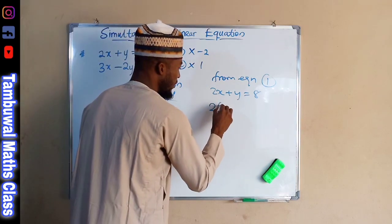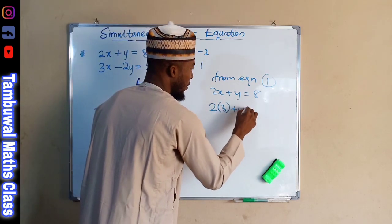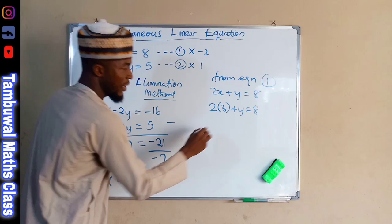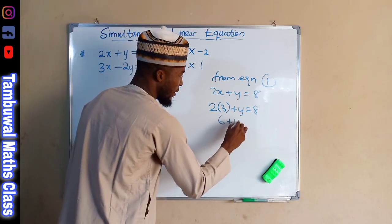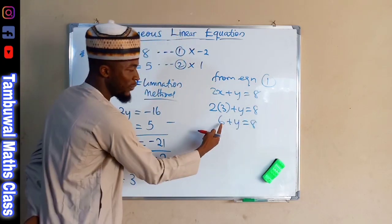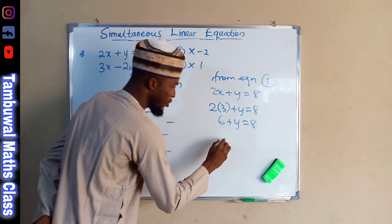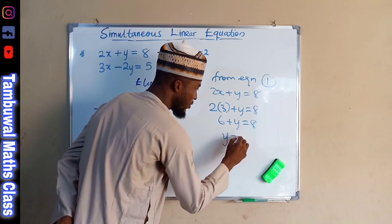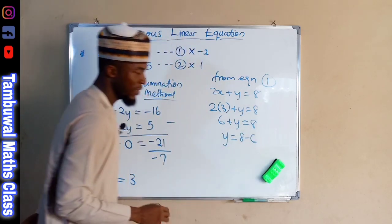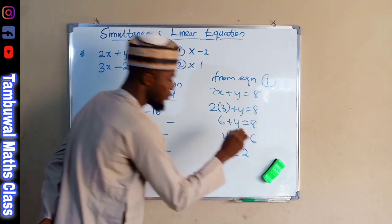So, we say 2 times 3 plus Y is equal to 8. And this is 6 plus Y equals 8. If you take this to the right-hand side, it becomes negative. Therefore, Y equals 8 minus 6. And Y, finally, equals 2.